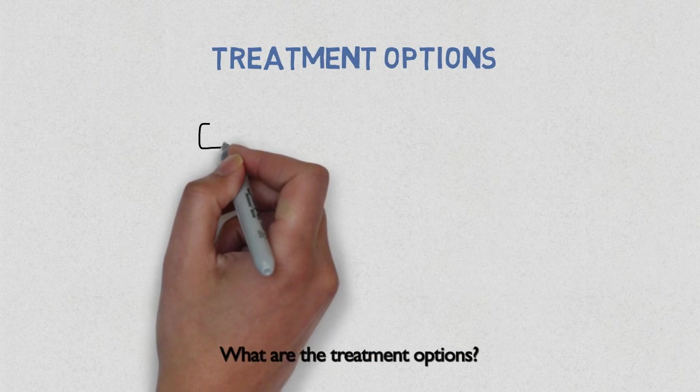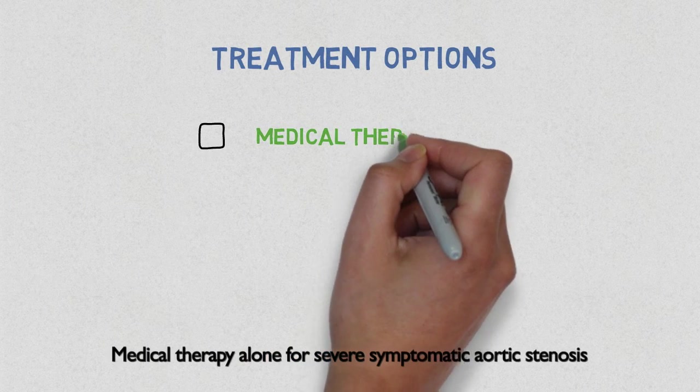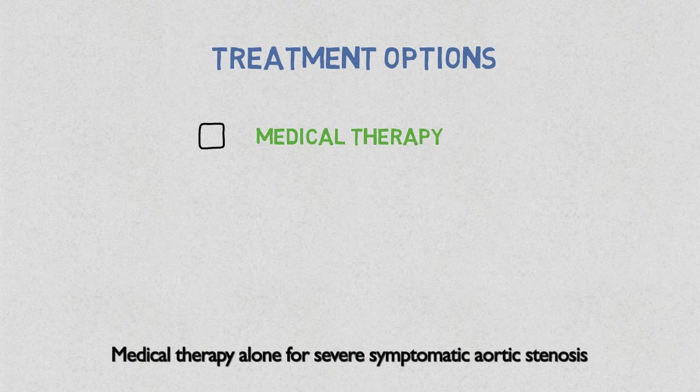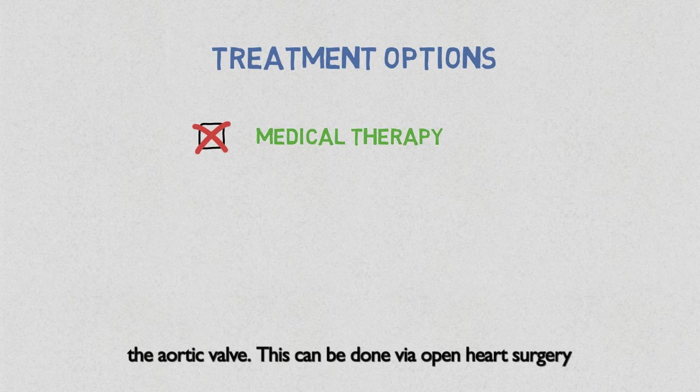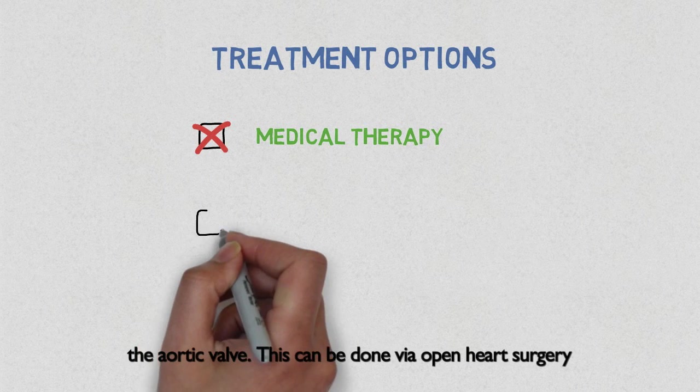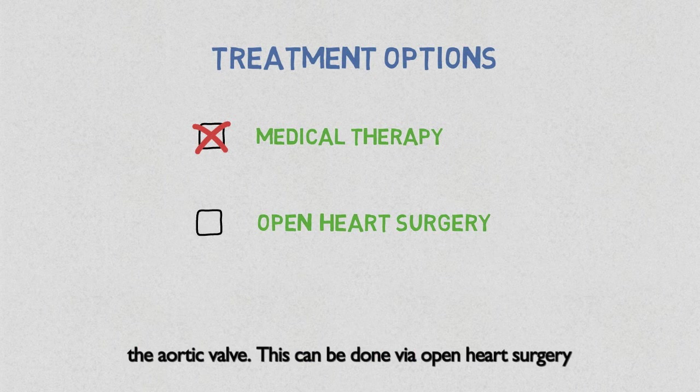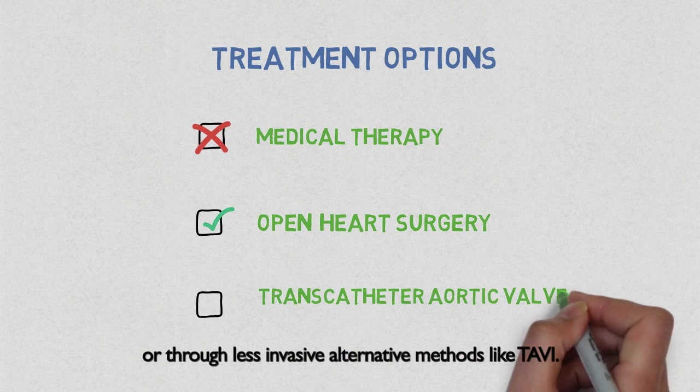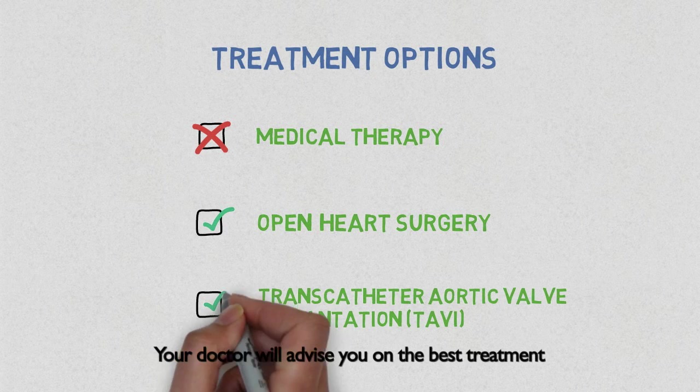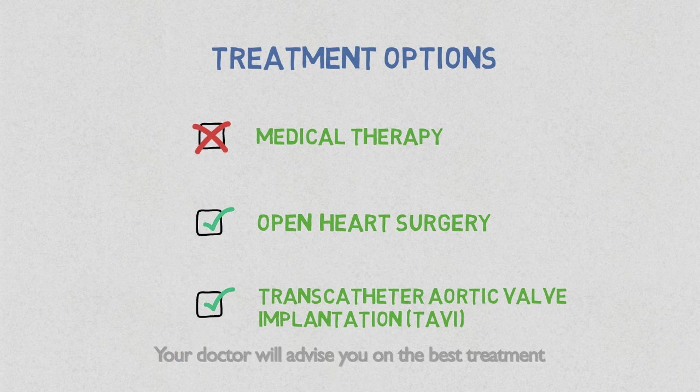What are the treatment options? Medical therapy alone for severe symptomatic aortic stenosis is generally ineffective. The primary treatment will be to replace the aortic valve. This can be done via open heart surgery or through less invasive alternative methods like TAVI. Your doctor will advise you on the best treatment option for your situation.